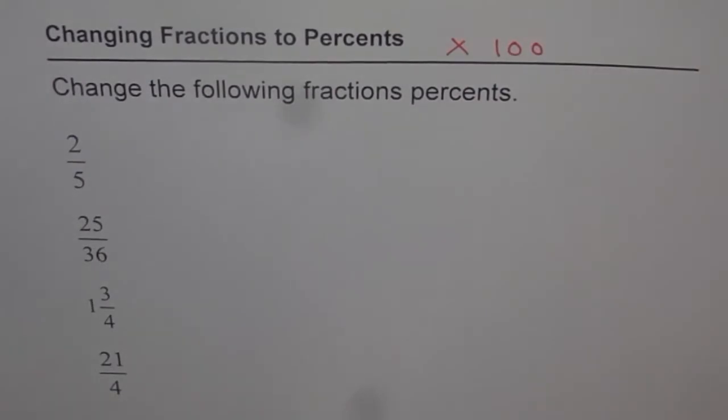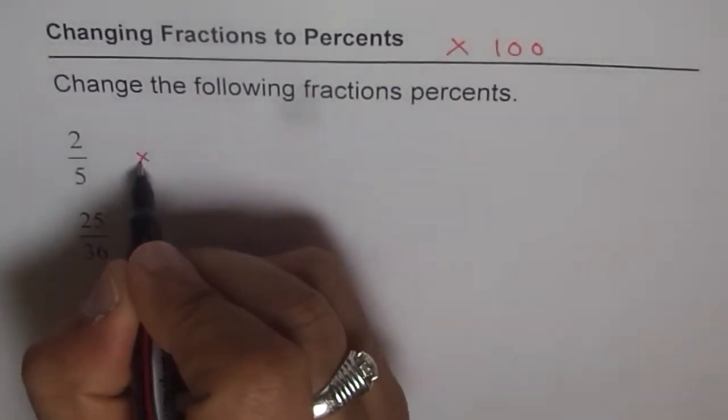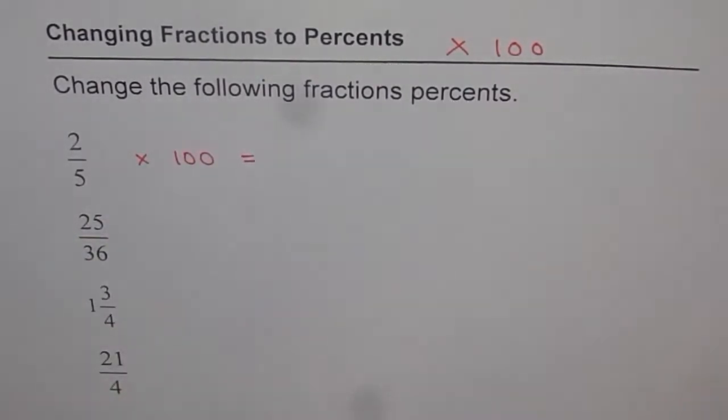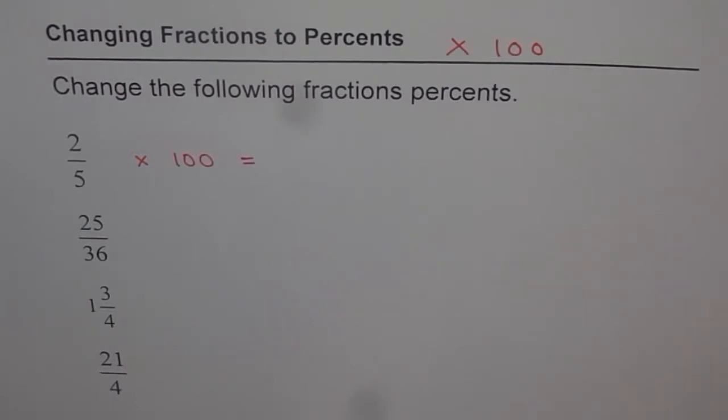So let's apply this rule and check. We have these fractions, so we can multiply them by 100 and then use a calculator. Remember, whenever you convert fractions to percent, you can get decimal numbers. So you get decimal numbers, write them as such with a percent sign.